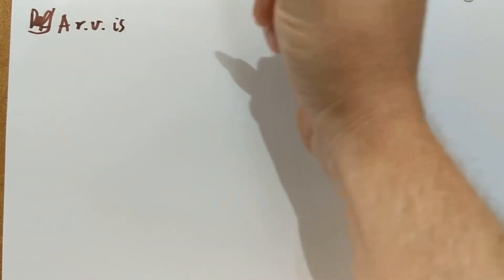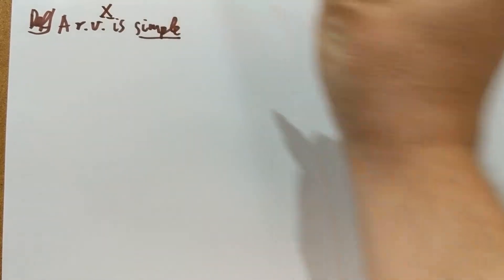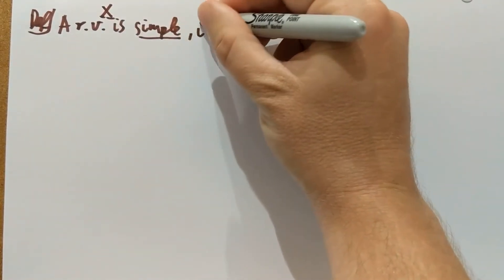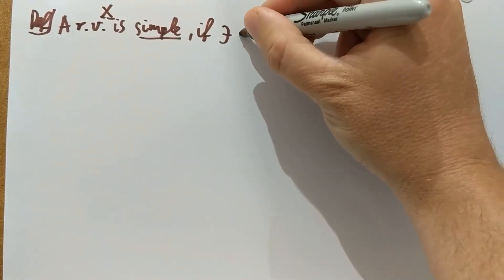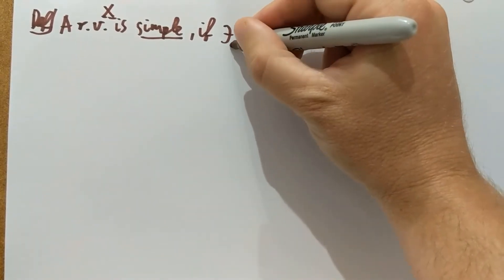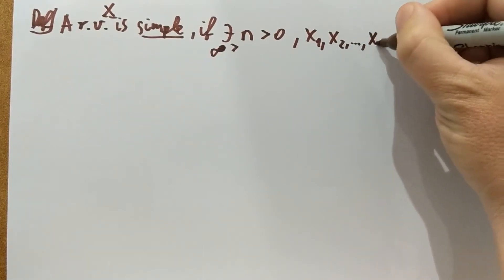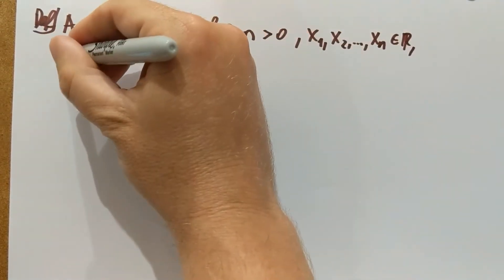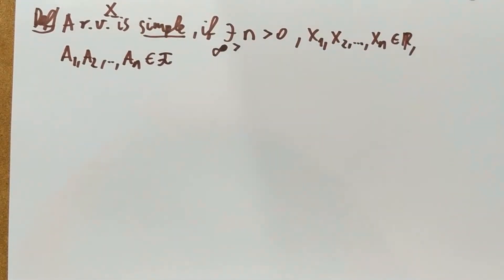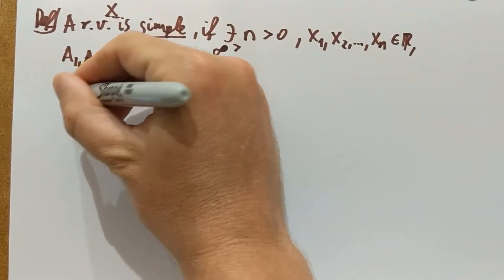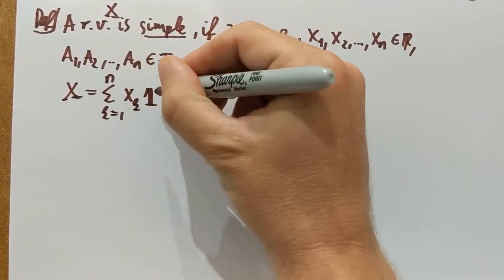So, thinking about a random variable as a function, it is called simple if it's piecewise constant. In other words, there exists n, larger than zero and finite — a finite integer number. There exist x1, x2 up to xn real numbers, and there exist a1, a2 up to an events — sets in the sigma algebra — such that the random variable x can be written as a finite sum from 1 through n of the values xk times the indicator of ak.